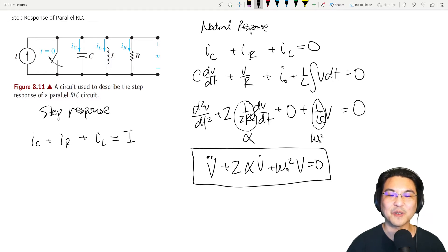So for the natural response, we have a homogeneous second order ODE. Homogeneous because this is zero. All right, to the step response.